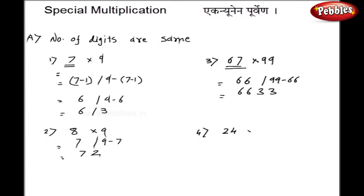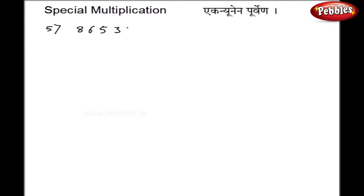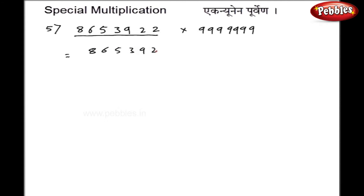Let us take one more example: 24 into 99. On the left hand side I get 23, and 99 minus 23 gives 76, so my final answer is 2376. Now let me show you one very big example of a 7-digit number multiplied by seven 9s. By traditional method this example is huge, but by Vedic mathematics using Ek Nuneena Purvena sutra, I can solve this instantaneously. Just subtract 1 and my left hand side becomes 8653921. Now for the right hand side, subtract everything from 9 and I get 1134078. This is my answer in a fraction of seconds.